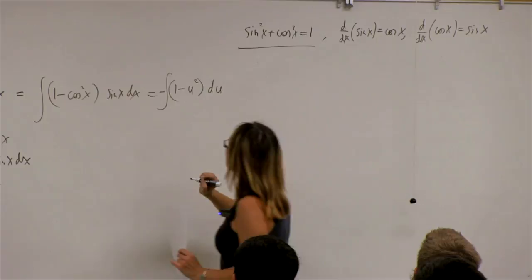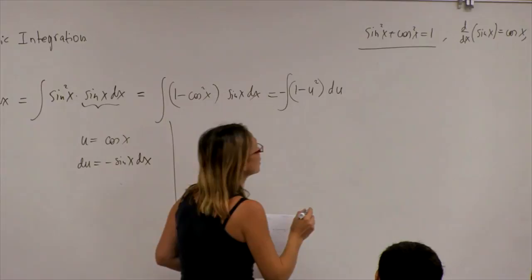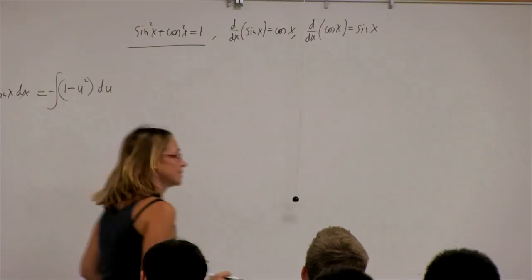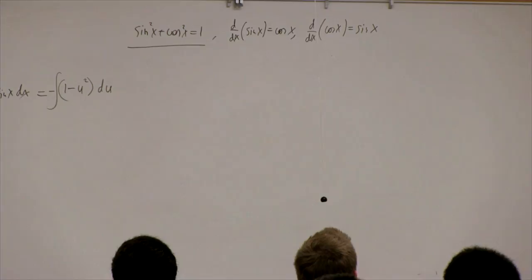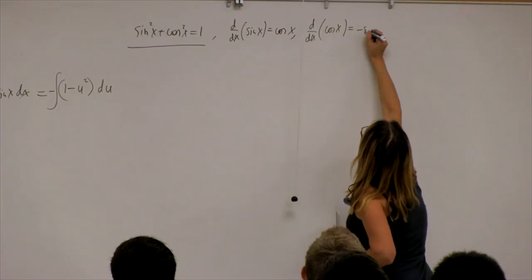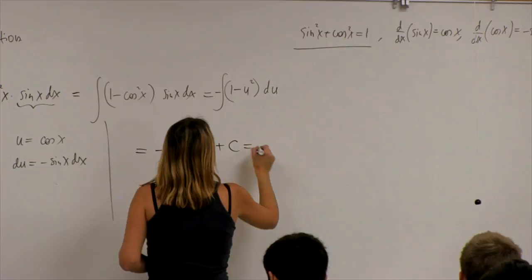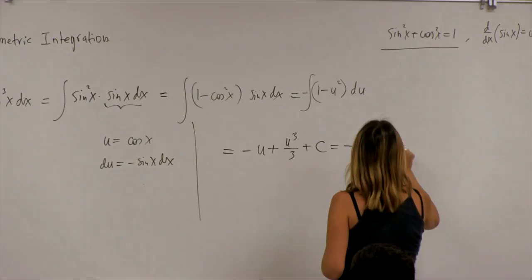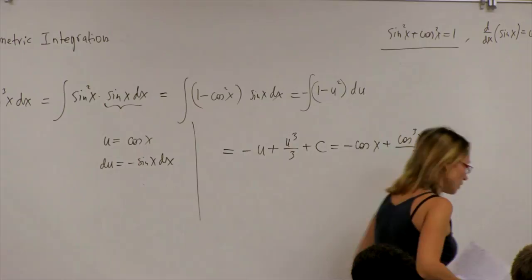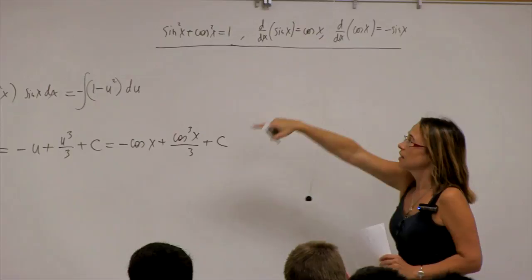And now we're almost done. A student corrects: it's negative sine x — thank you very much. So we have a minus sign, giving us u plus u cubed over 3, then rewriting back in the original variables: cosine x plus cosine cubed x over 3 plus C. So this kind of rule allowed me to evaluate this integral.